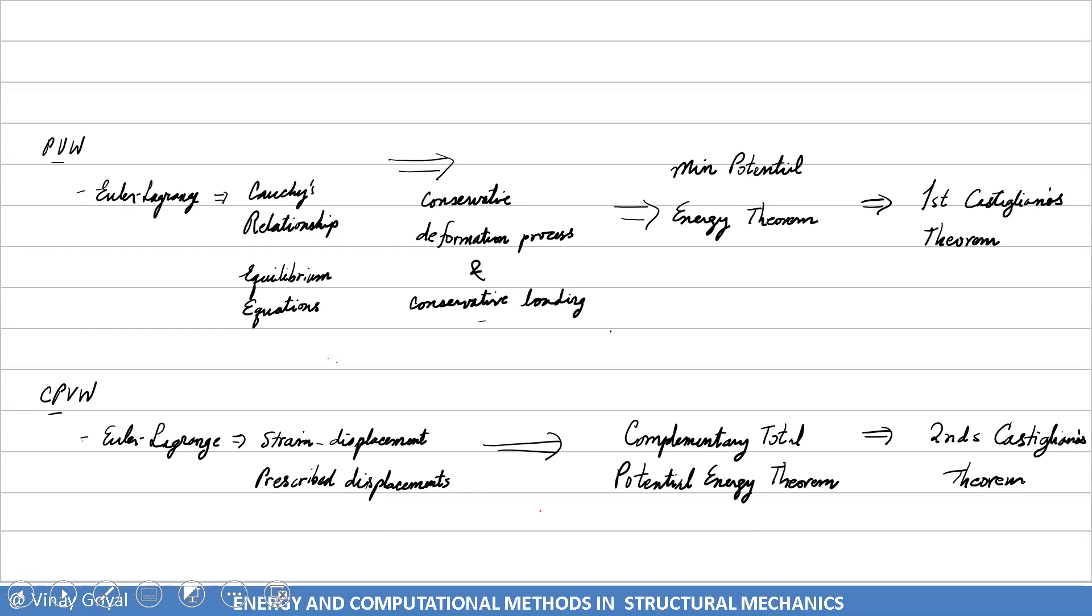So you may ask me, what is each one useful for? PVW is useful for deriving structural theories. Also, the complementary principle virtual work. Principle virtual work is finite element-based. Complementary principle virtual work is boundary element-based. You may have heard about that method for analysis. And it can help you also to derive—PVW and CPVW can help you derive structural theories and help you formulate a finite element formulation for a problem, for the most general case.